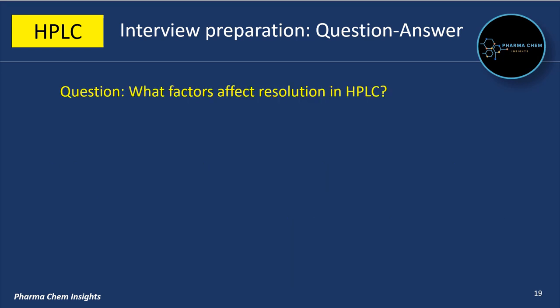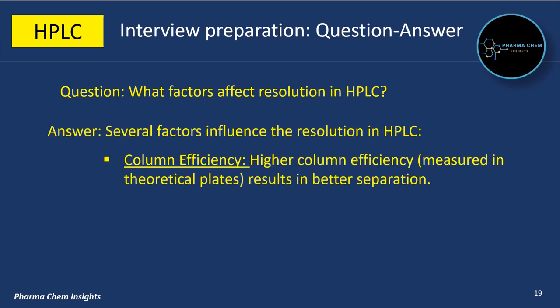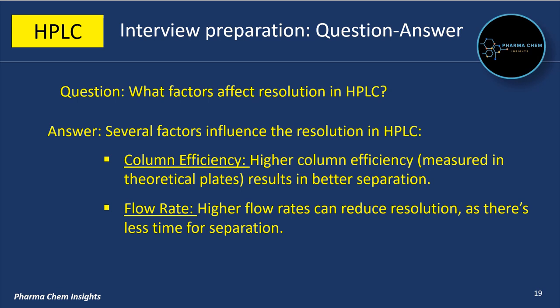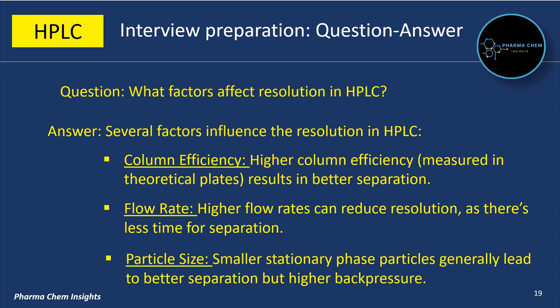Next question: what factors affect resolution in HPLC? Several factors influence resolution. First is column efficiency — higher column efficiency results in better separation; column efficiency is measured in theoretical plates. Next is flow rate — higher flow rates can reduce resolution as there is less time for separation. Next is particle size — smaller stationary phase particles generally lead to better separation but higher back pressure.